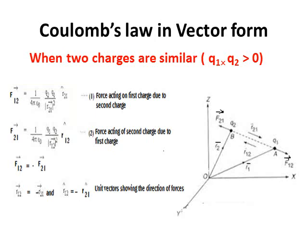In vector form, Coulomb's law may be expressed as F₁₂ vector, that means force on charge q1 due to q2, and it will be equal to (1/4πε₀) × (q1q2/r²) × r̂₂₁.